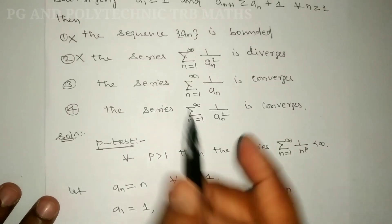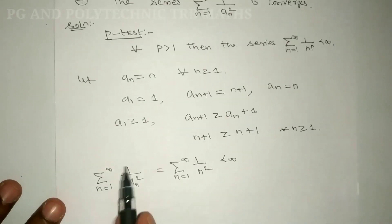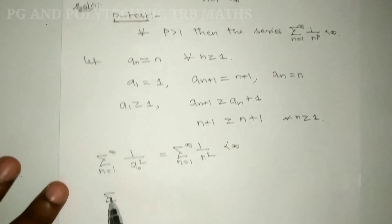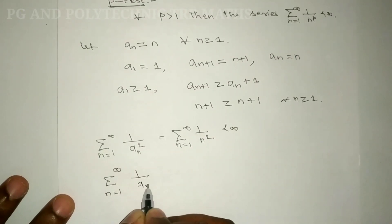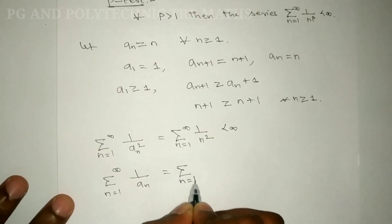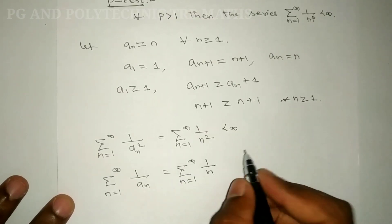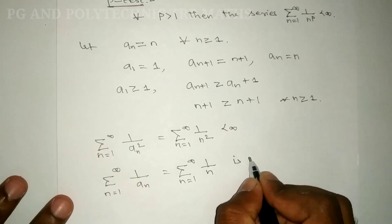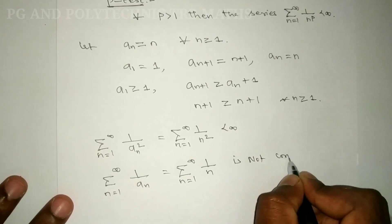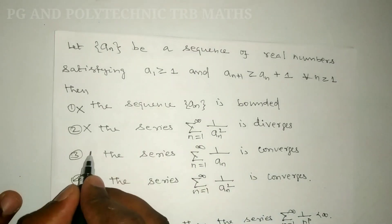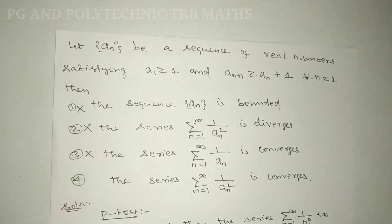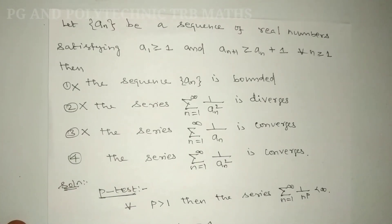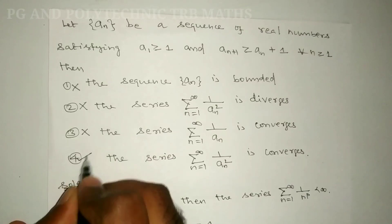Now Σ(1/a_n) from n=1 to infinity with a_n = n gives Σ(1/n), the harmonic series, which diverges. So Option C, which claims Σ(1/a_n) converges, is false. Finally, Σ(1/a_n²) from n=1 to infinity converges, so Option D is the correct answer.